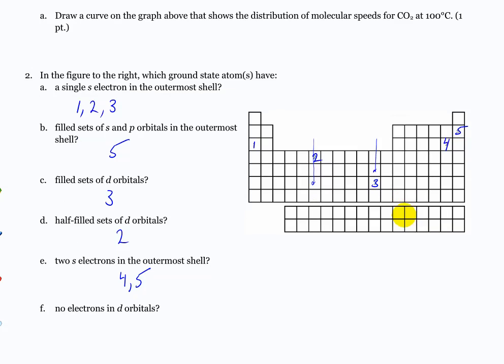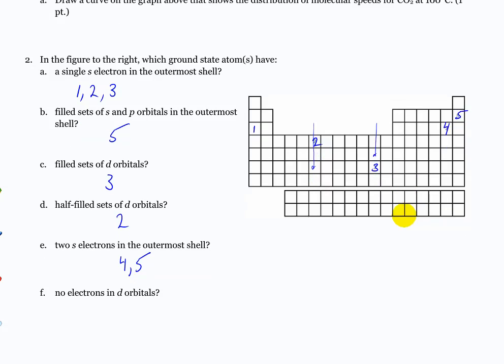Which of these have no electrons in D orbitals? One, five — and four and five, or three and five.